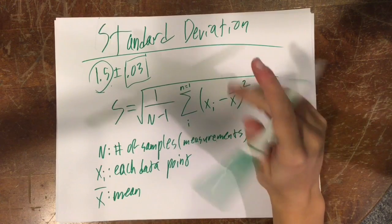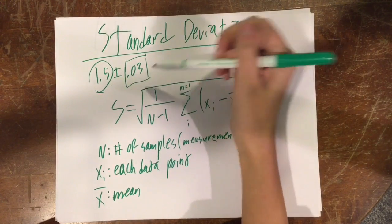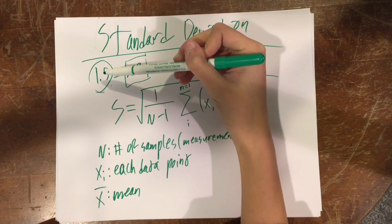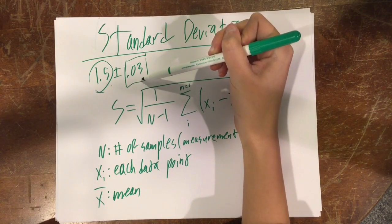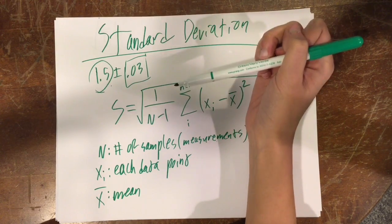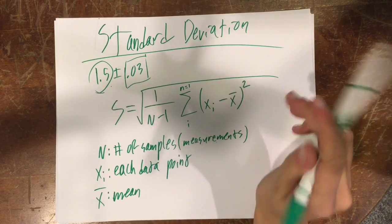So standard deviation, as I already said, is a way to get error. It is usually written out like this, where this is the average of all the data points you have. And this is the standard amount that the other data points deviated from that average. That's why it's called standard deviation.